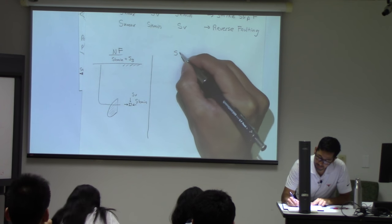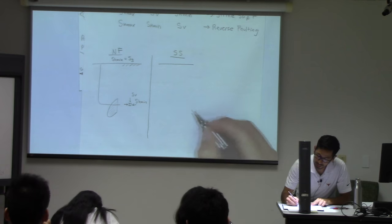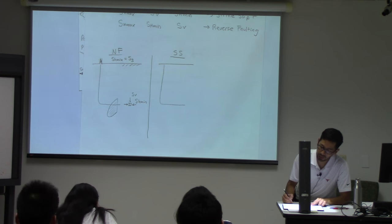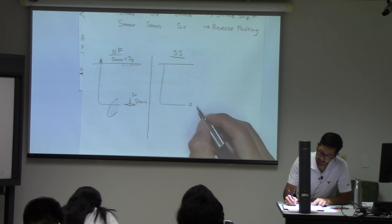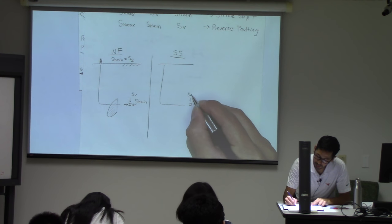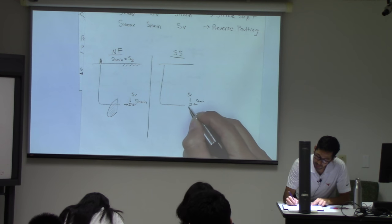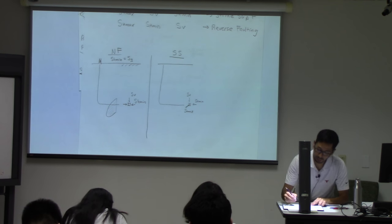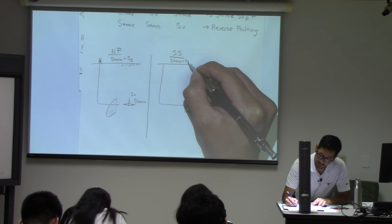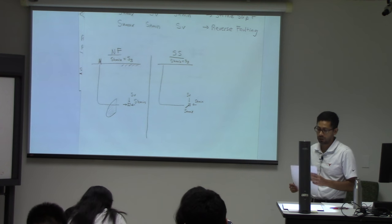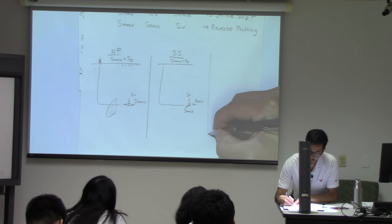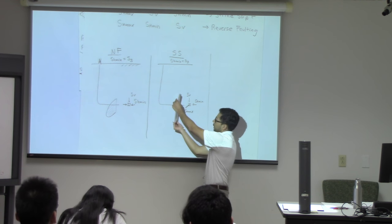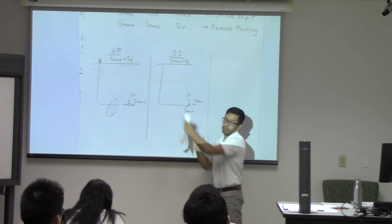What about in strike-slip faulting? Again, we have a similar wellbore going into a formation in which we have SV, SH-min, and SH-max. What is going to be the orientation of a hydraulic fracture? The same — a plane that comes out like that, because it's perpendicular to SH-min.